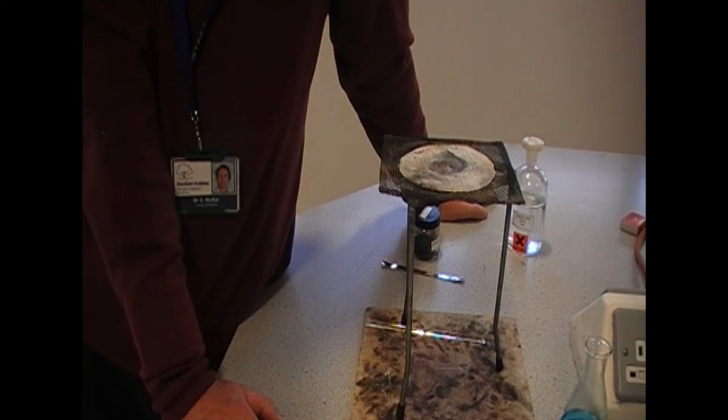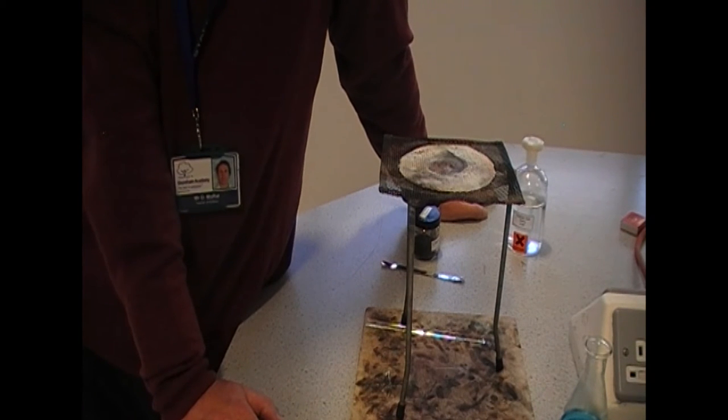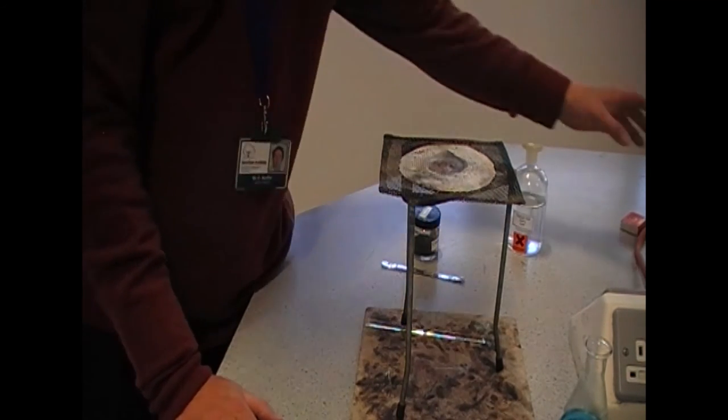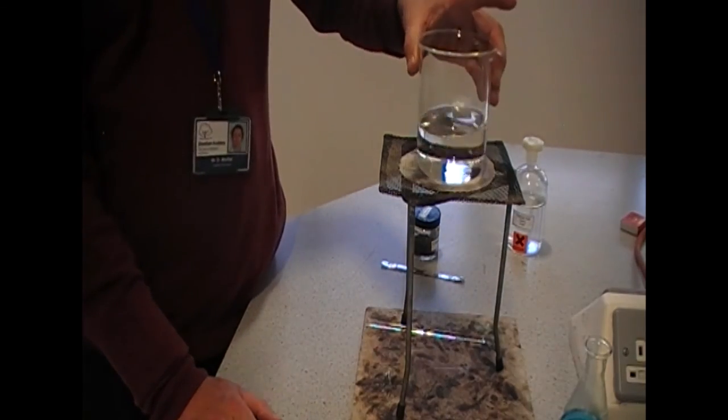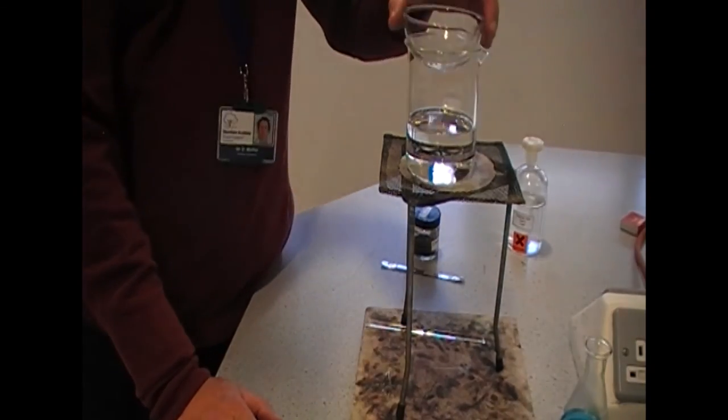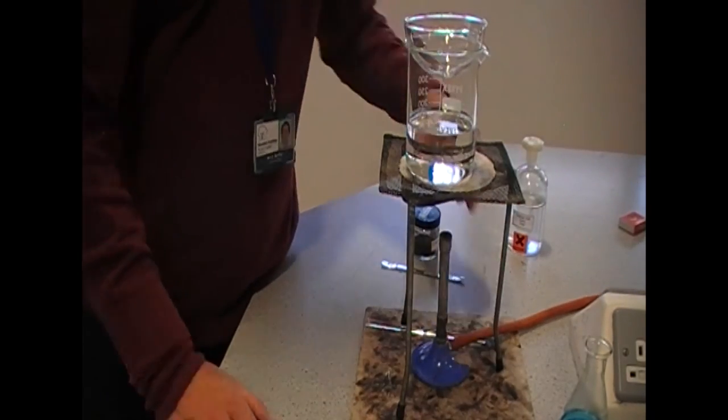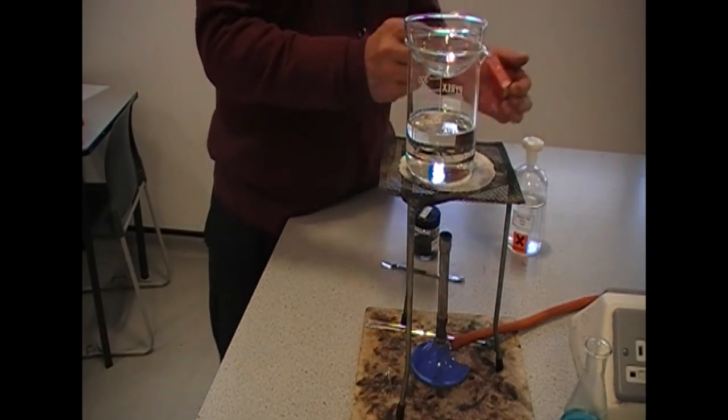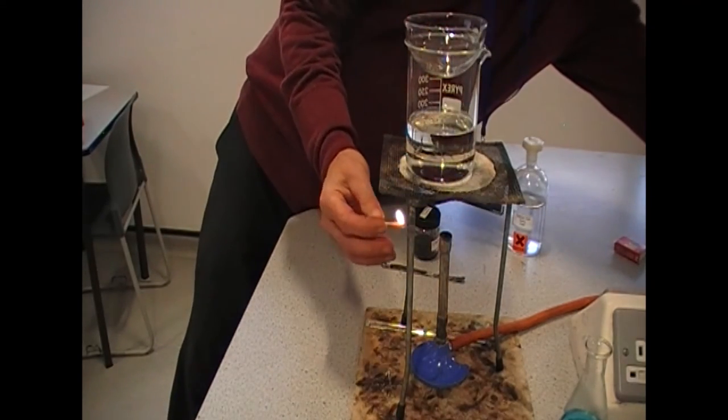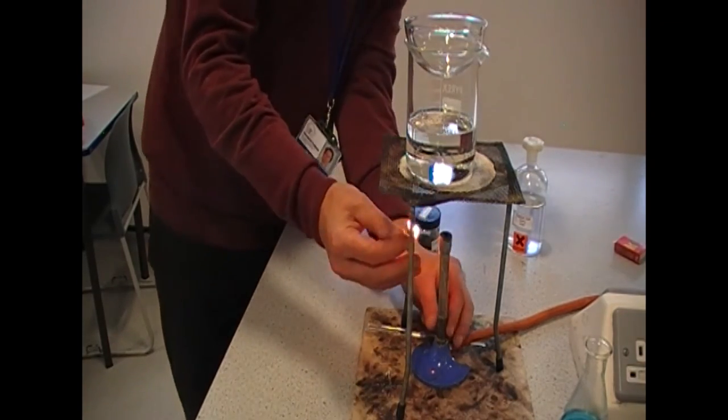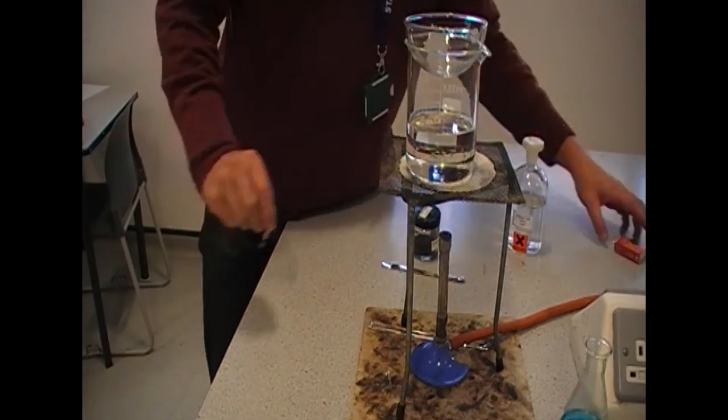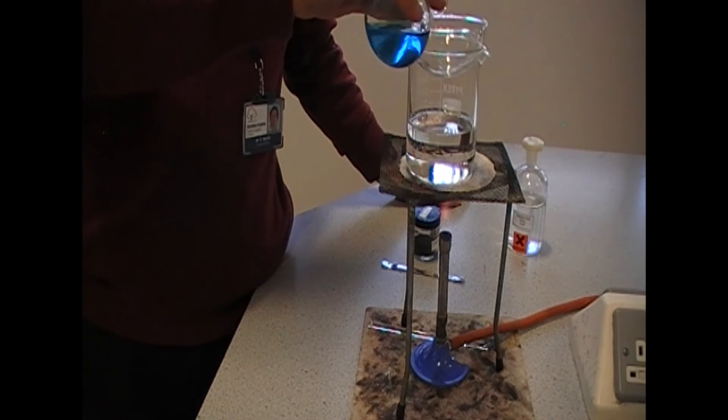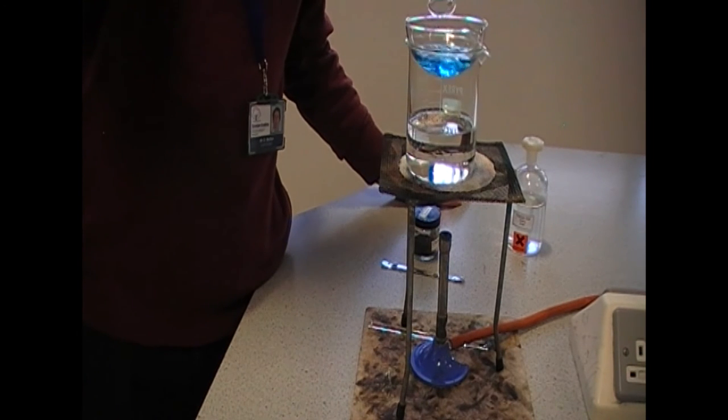When the filtration is complete, pour the contents of the conical flask into the evaporating basin and evaporate this gently using a water bath. Here's our water bath. Here's our evaporating basin. Bunsen burner.